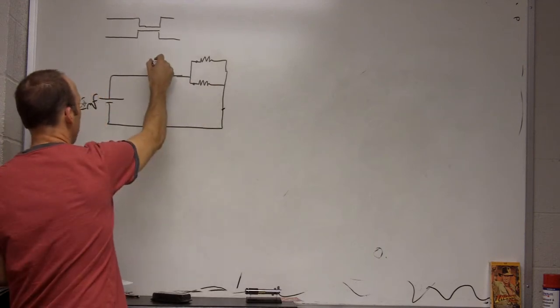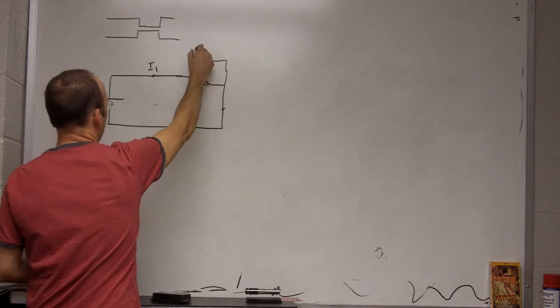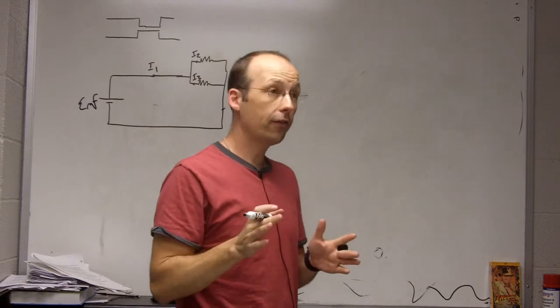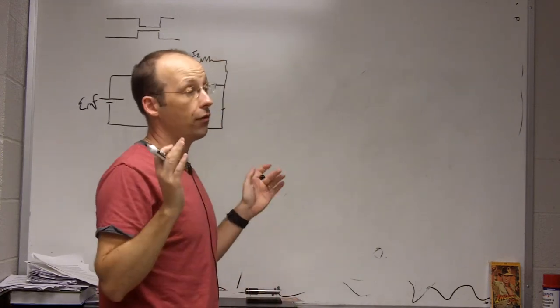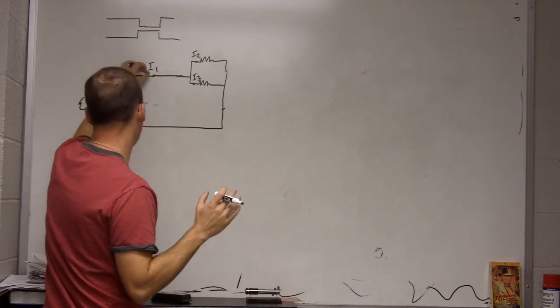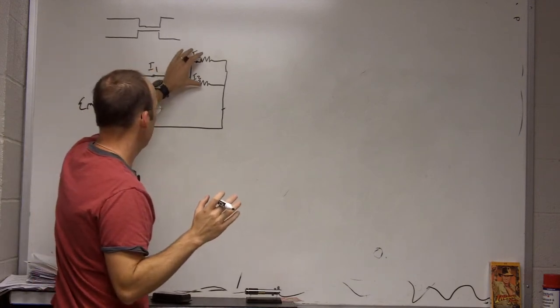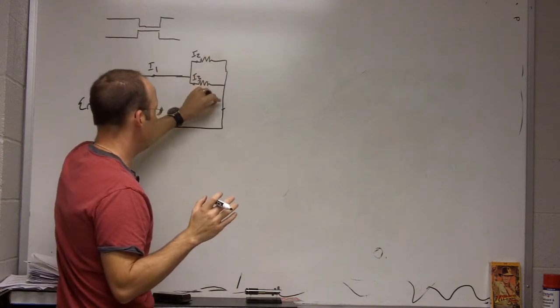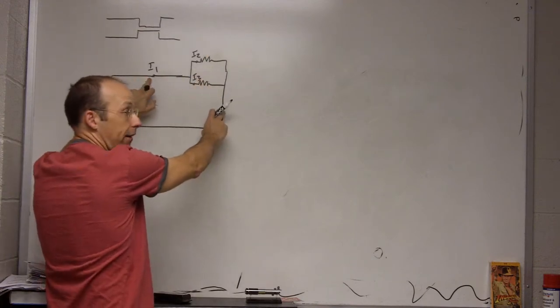Well, let me call this I1, I2, and I3. So, we have the current. First of all, we have conservation of current. So, if this were a water pipe, and there's water going through here, and it splits. Some of it goes through one light bulb, and some of it goes through the other, and it comes back.